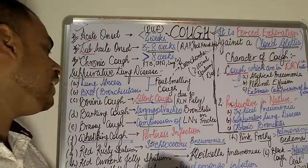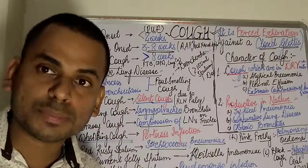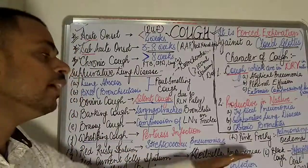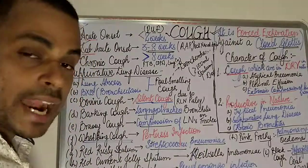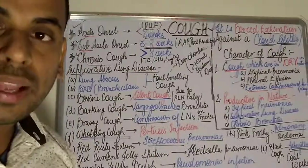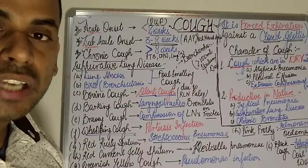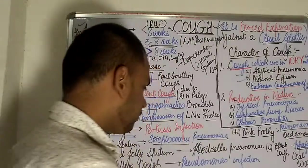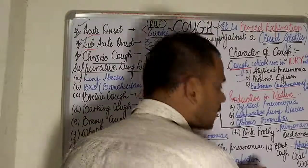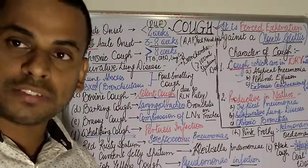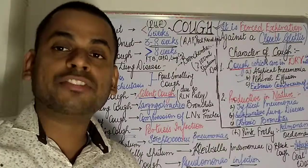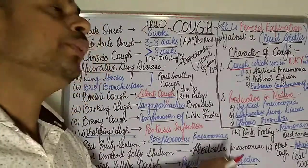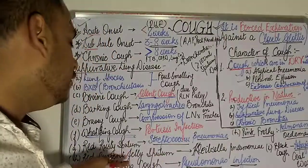Red currant jelly sputum — with a red currant color and jelly consistency — is seen in Klebsiella pneumoniae. Greenish-yellow color of the cough is mostly seen in Pseudomonas infection, which is mostly occurring in patients with severe burns.